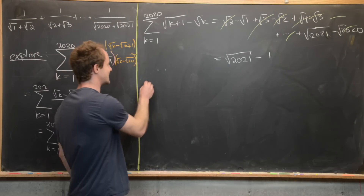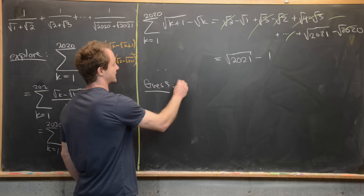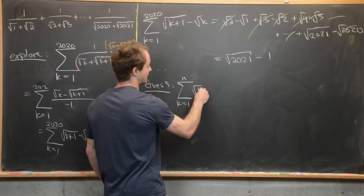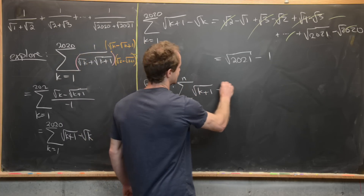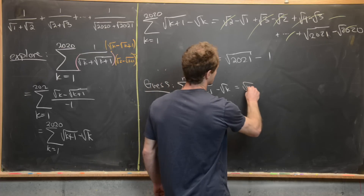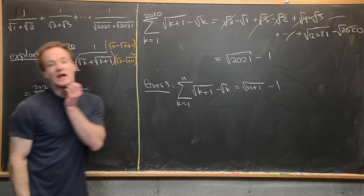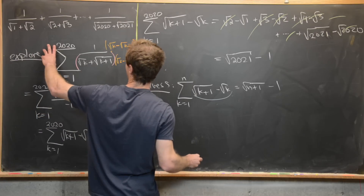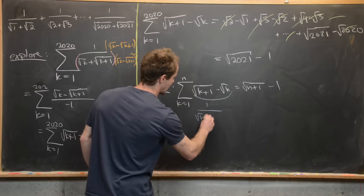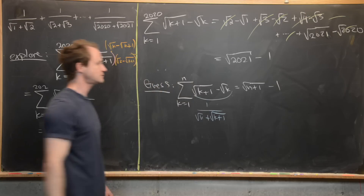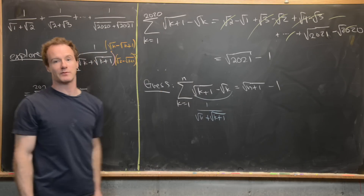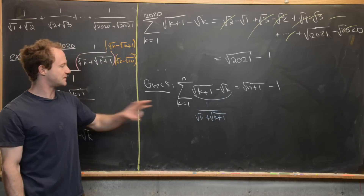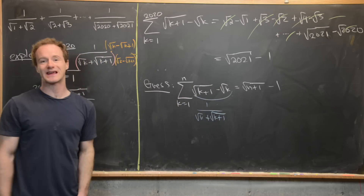We can guess a general formula: the sum from k=1 to n of 1/(√k + √(k+1)) equals √(n+1) - 1. This is equivalent to our telescoping reformulation. Now I want to prove this carefully with induction.